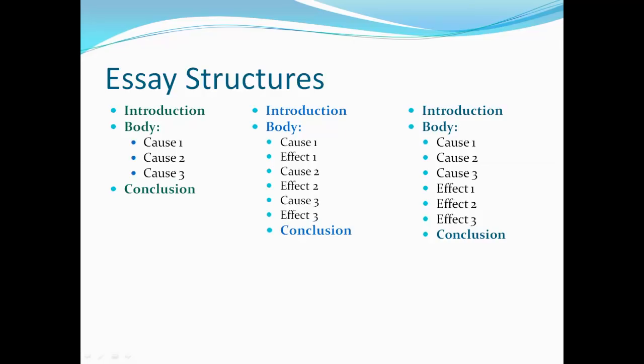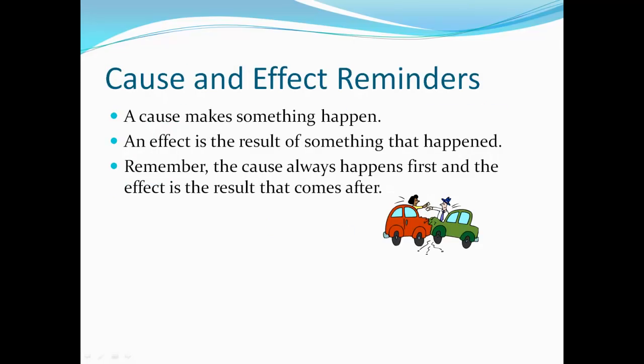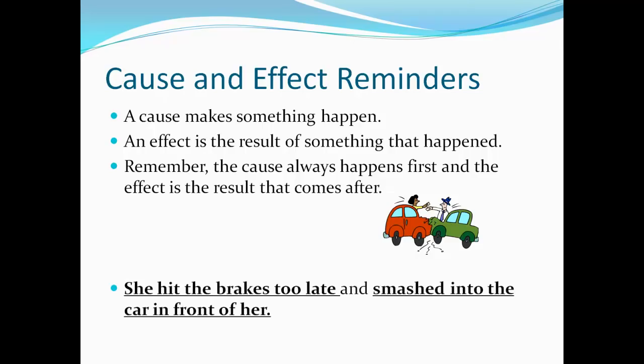A cause makes something happen. An effect is a result of something that happens. Remember, the cause usually happens first, and the effect is the result that comes after. Look at this example: She hit the brakes too late and smashed into the car in front of her. The first half of the sentence is the cause — she hit the brakes too late — and the second part is the effect — smashed into the car in front of her.